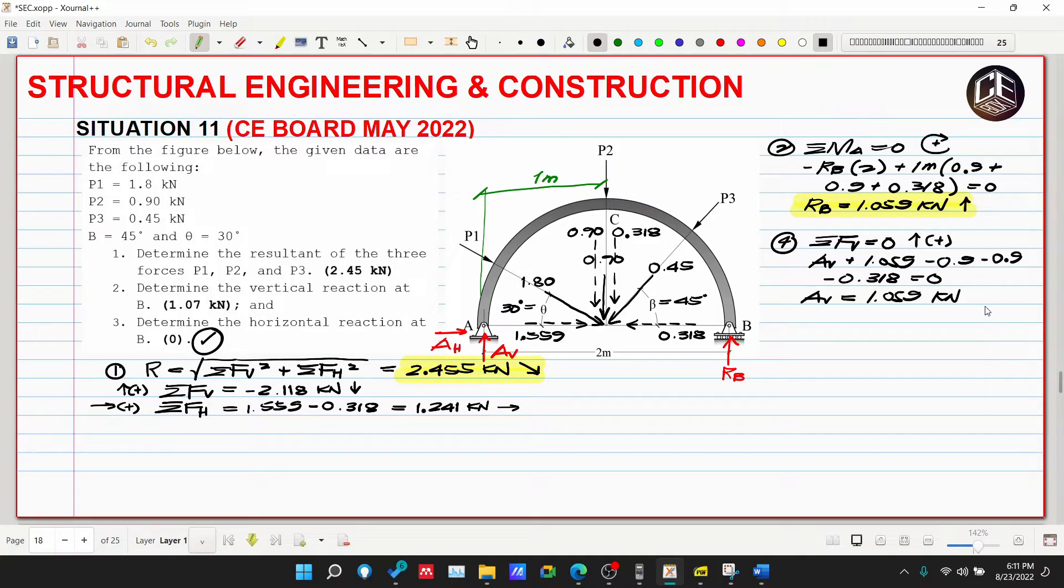Siguro yun yung dahilan kung bakit hindi na pinahanap yung reaction sa AV. Anyway, kung gusto namang i-pahanap yung AH, madali lang din naman by summation of forces horizontal is equivalent to 0. To the right is positive, so AH natin is positive kasi assumption natin to the right, then plus 1.559 minus 0.318 is equivalent to 0. Ibig sabihin ang AH natin is equivalent to summation of FH which is 1.241 kilonewton. Kaso negative ang nalabas kasi obvious naman na ang mas may kailangan ng tulong in terms of equilibrium is yung 0.318, therefore ang ating AH is not to the right, it should be directed to the left, kaya nag-negative yung ating sagot.